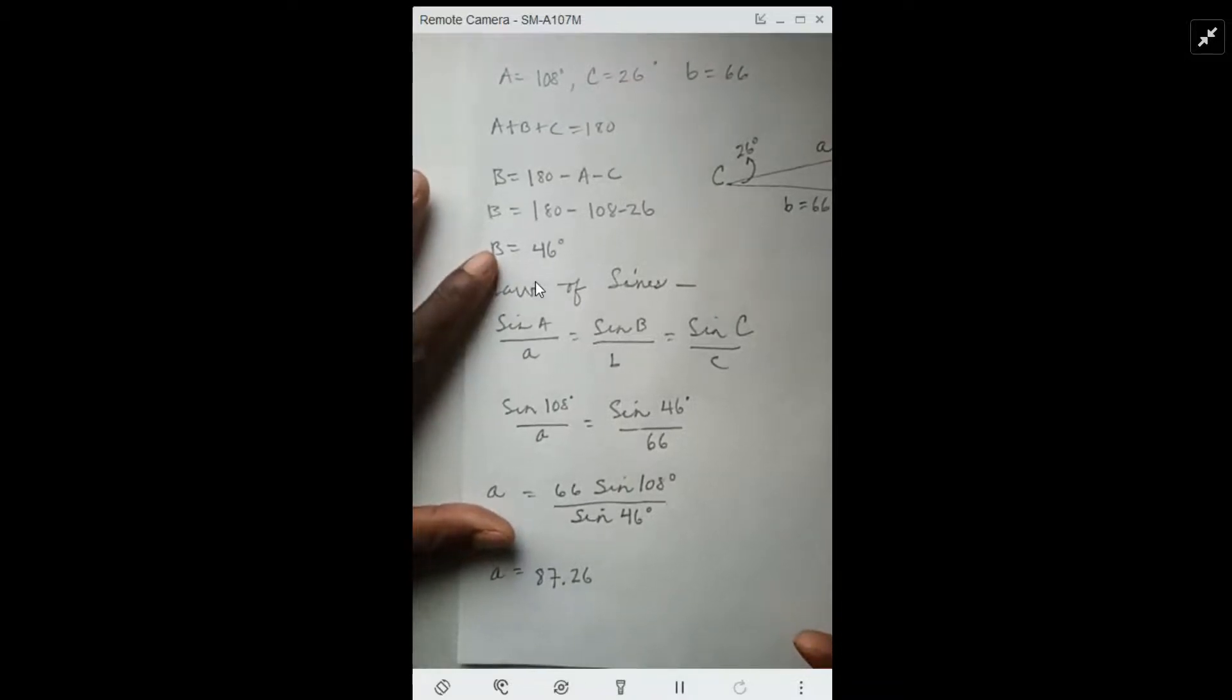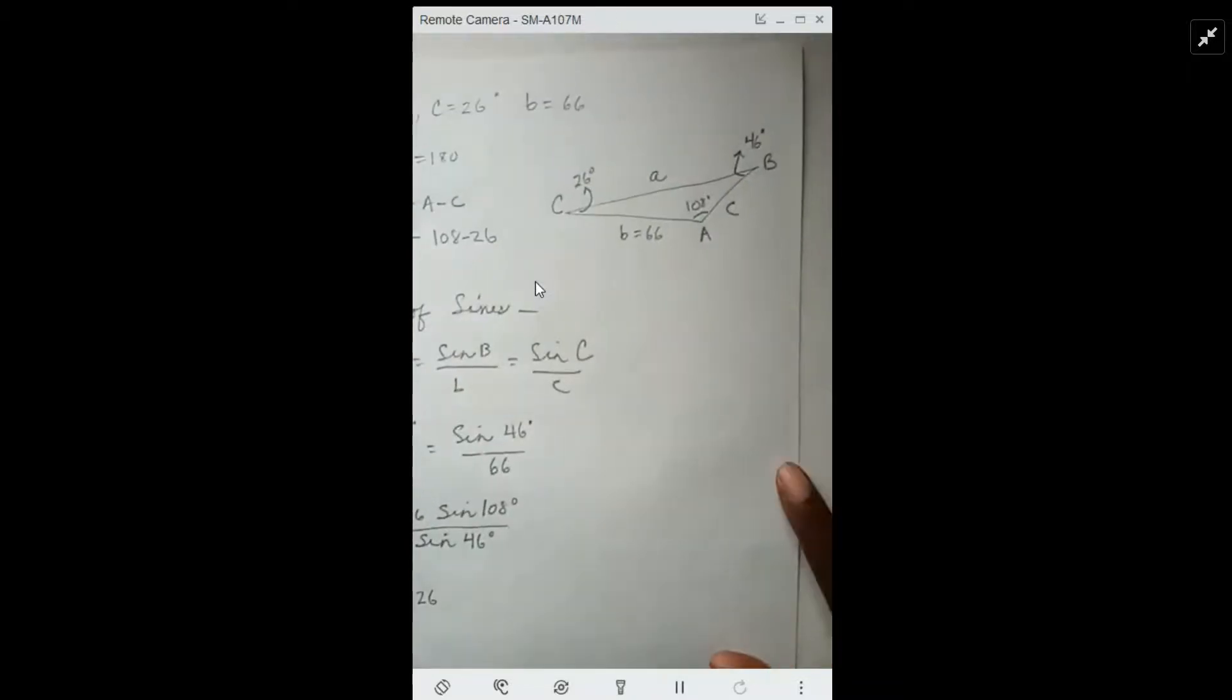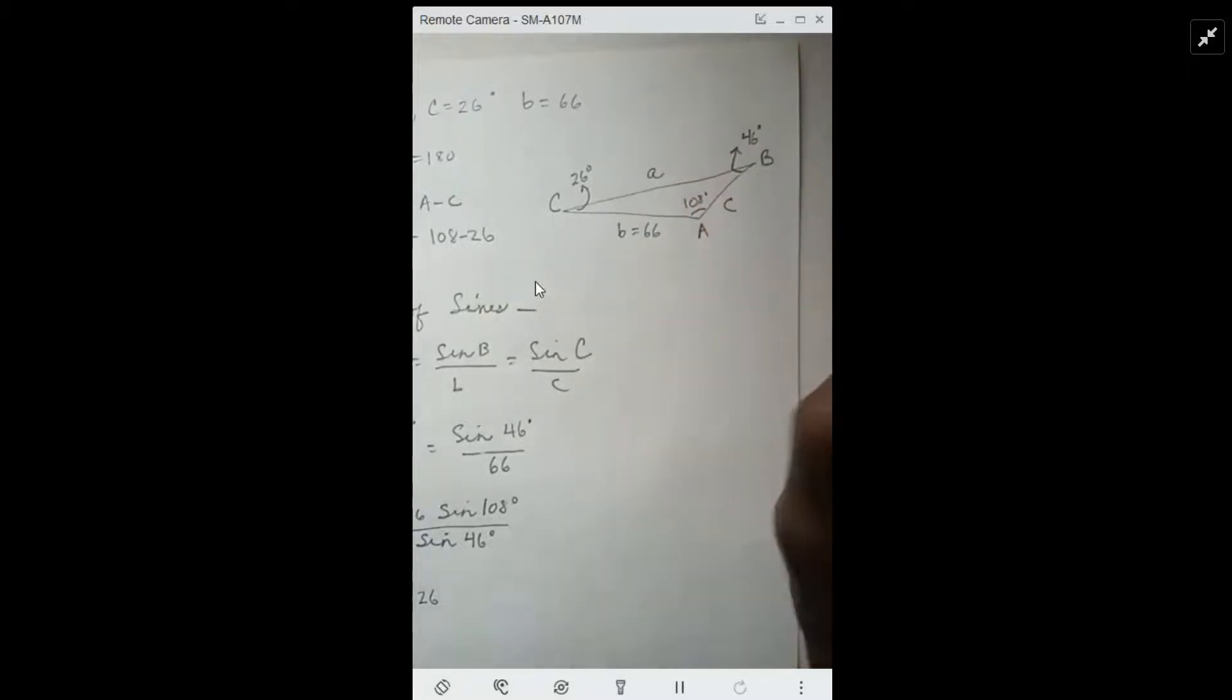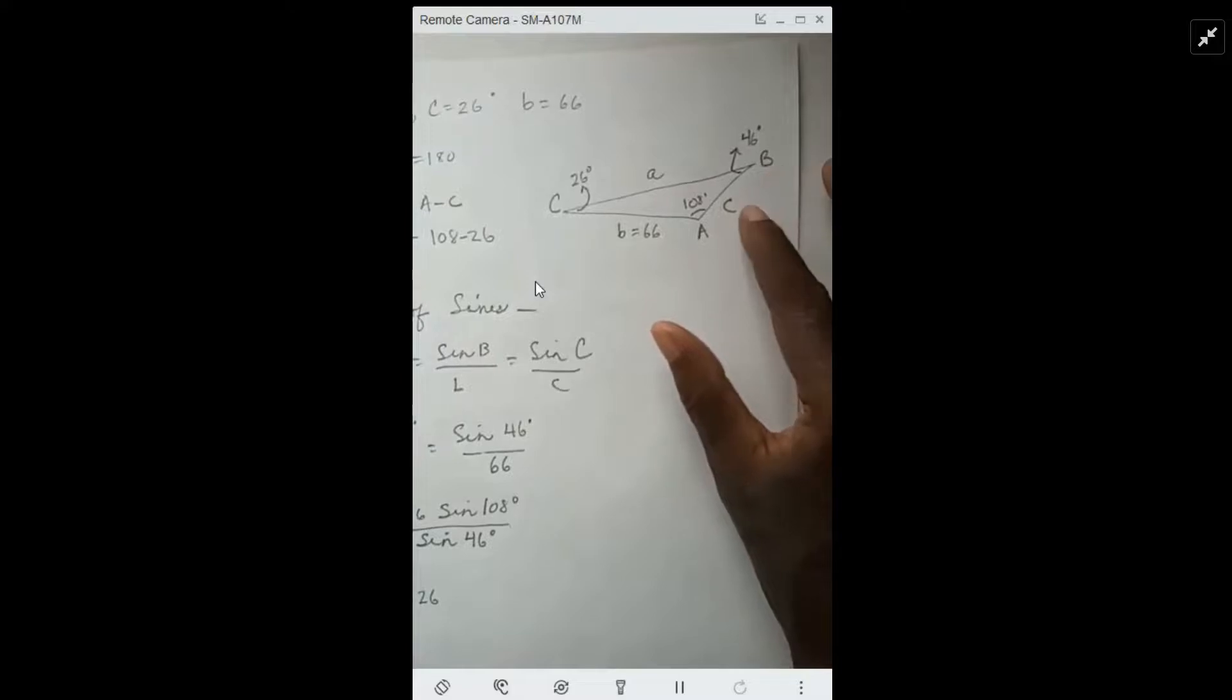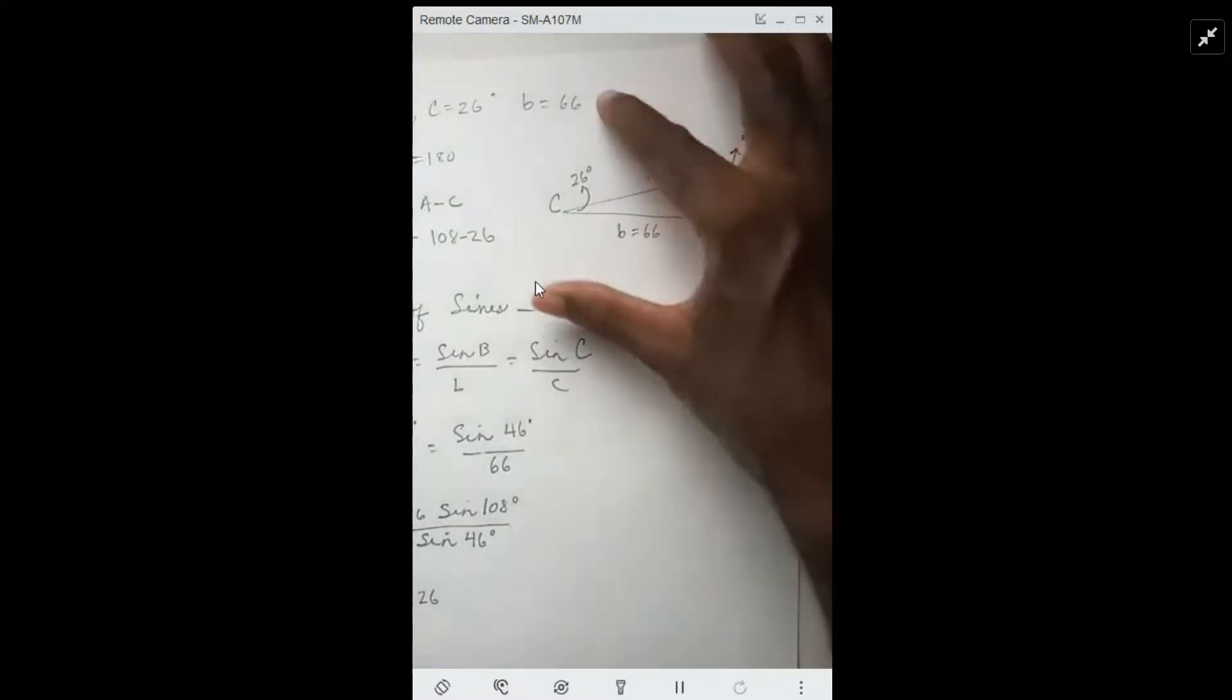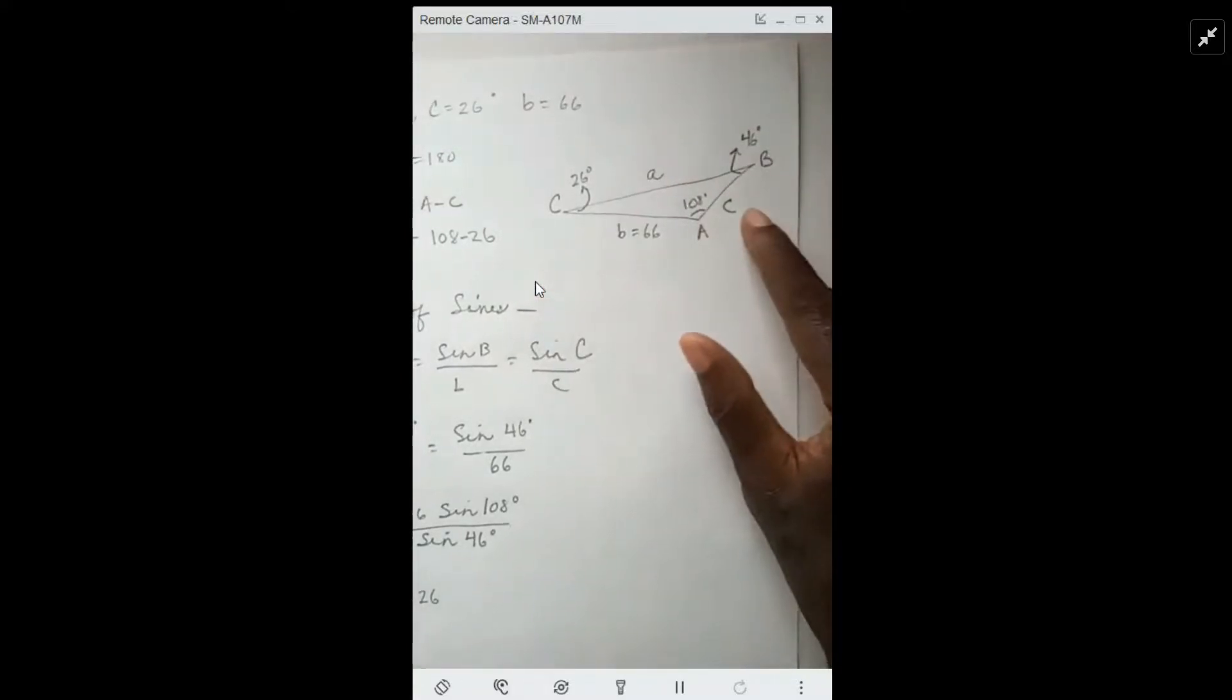I'll leave it to you to find the other two values in this same fashion. And once again, here's the diagram. We have A now, so we need to find side C. We have B too, so all we're looking for is side C. Find side C in the same fashion.